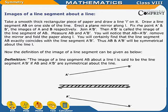Now the definition of the image of a line segment can be given as below. Definition: The image of a line segment AB about a line L is said to be the line segment A'B' if AB and A'B' are symmetrical about the line.